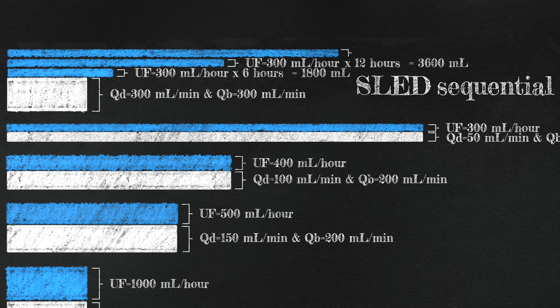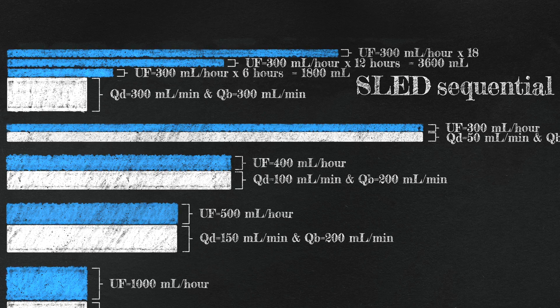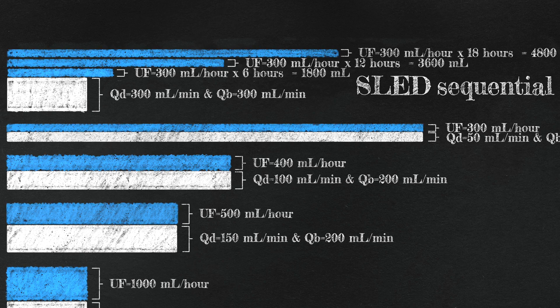For example, if your goal is to remove 4.8 liters over 24 hours, then you can run that treatment for 18 hours.